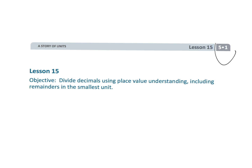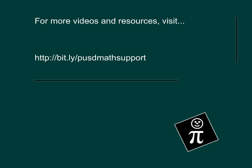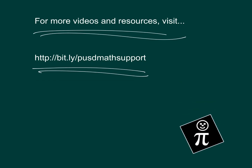That wraps up fifth grade module one lesson 15 — using the standard algorithm to divide decimals where remainders cause us to add zeros at the end of the division process.